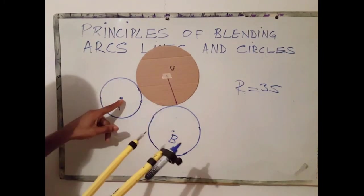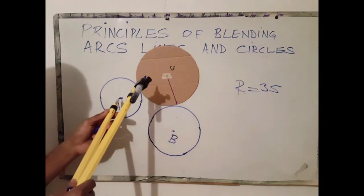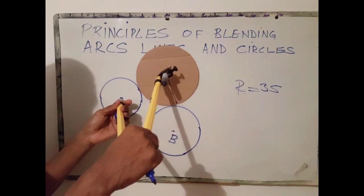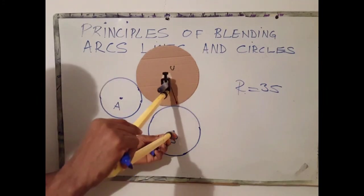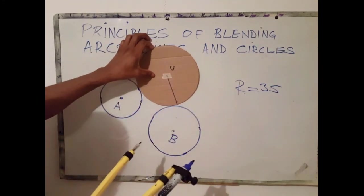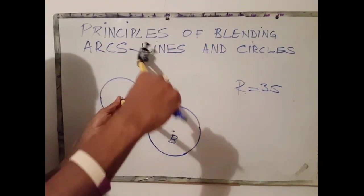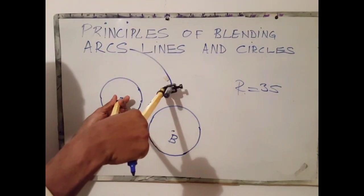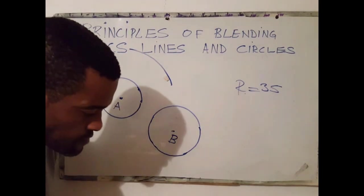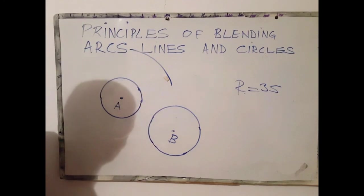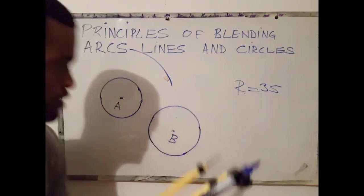To find this center, we would add this radius to this radius. So in this case, radius is that. So we would then use, add both radius from this point.